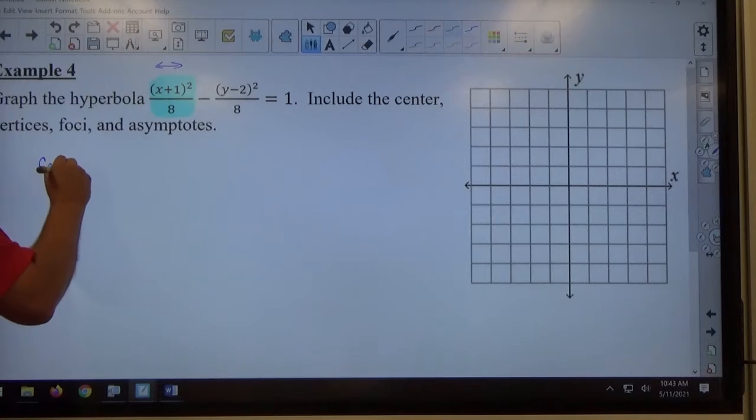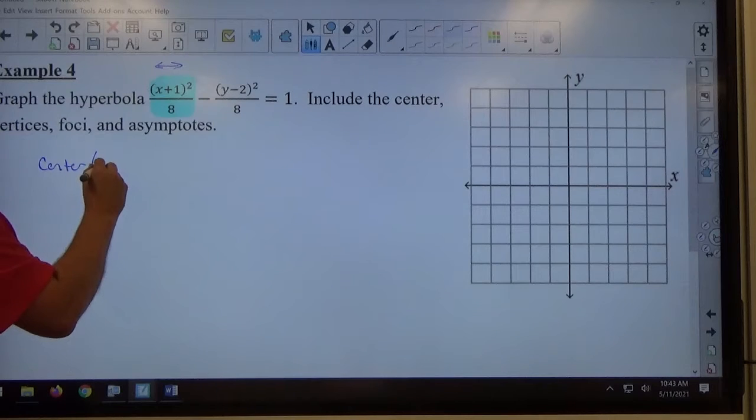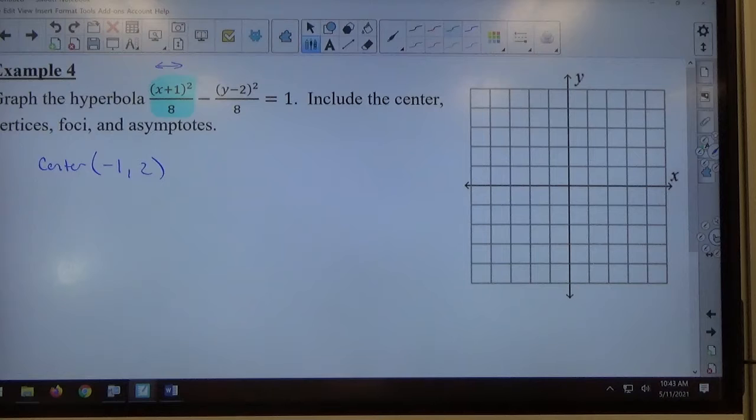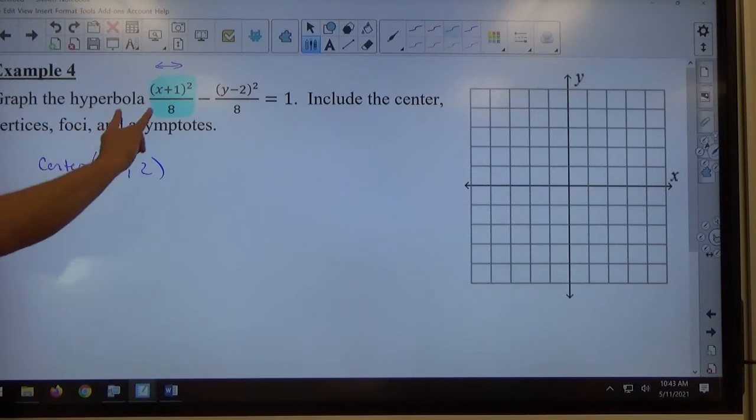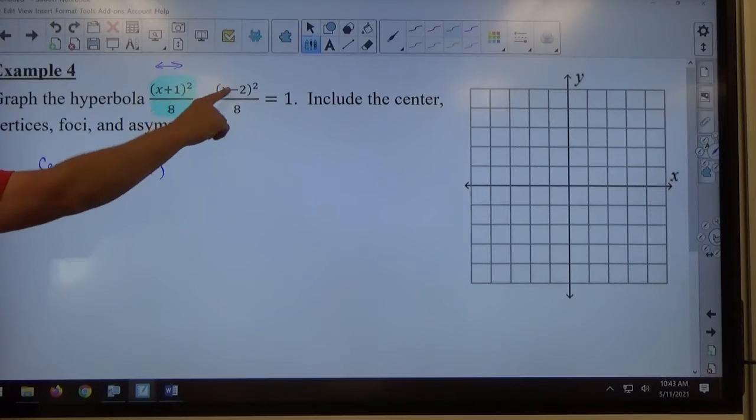So here we go. First off, what is the center? Negative 1, 2. Just be careful with order. h is always with x, k is always with y, and the signs are always opposite. With both the ellipse and the hyperbola, the order happens differently. This is x first, y second, h, k.